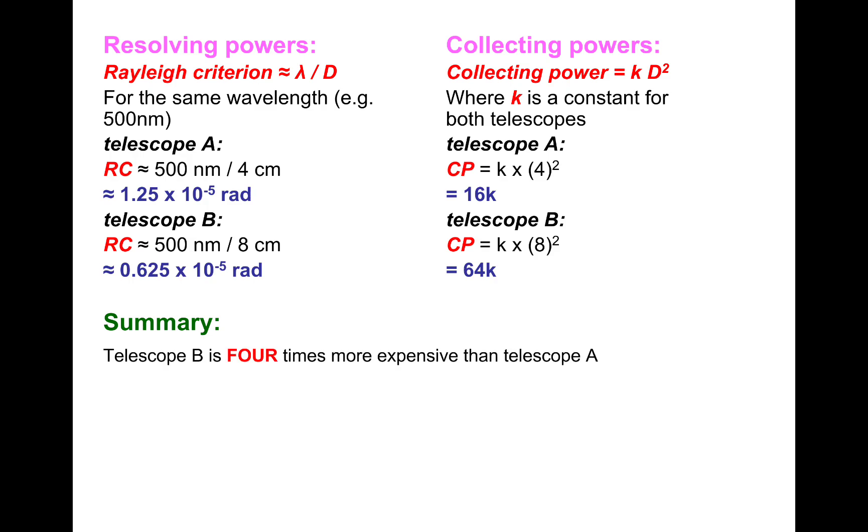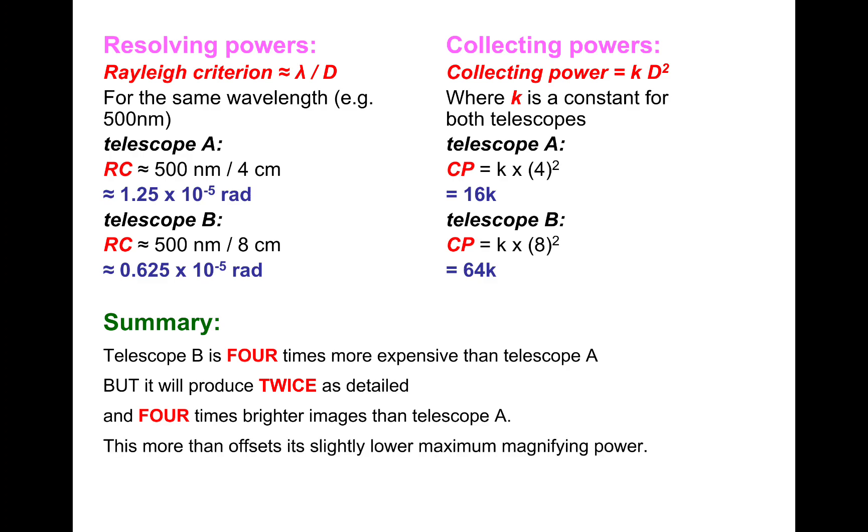So to summarize, Telescope B is 4 times more expensive, but it will produce twice as detailed images because of the Rayleigh criterion being half. So its resolution will be twice as good. And it will be 4 times brighter than Telescope A due to its 4 times greater collecting power, which offsets its slightly lower maximum magnifying power, which was 200 versus 160 times.